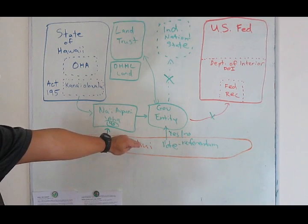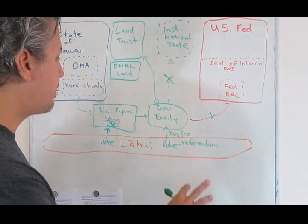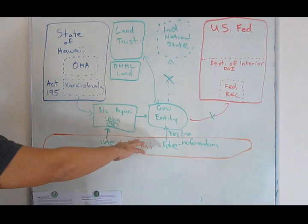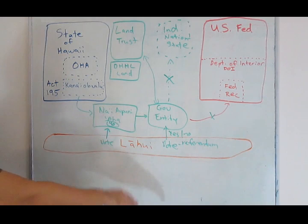Number two, get ready to vote on whatever the referendum comes out. In the affirmative or in the negative. Number three, plenty Kanaka out there, I know, they have so many suspicions about this process that they're just saying, take me off the list, I wanna disenroll, I'm not gonna be involved at all in this process.